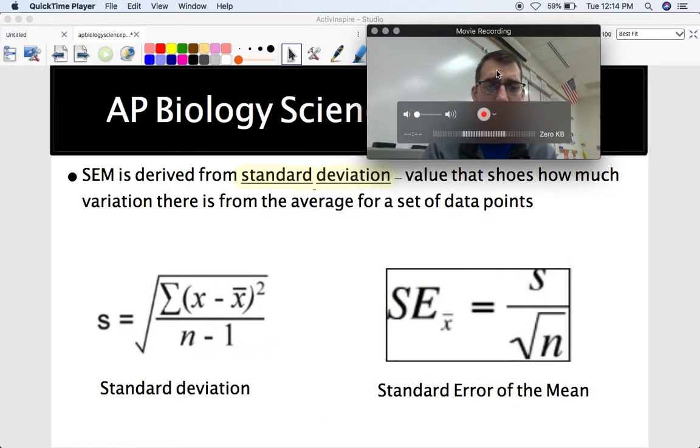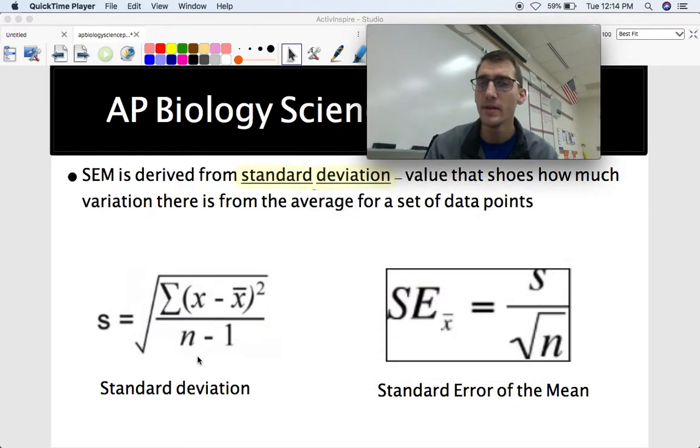So the larger the number, the greater the standard error of the mean and the less confidence we have in the mean actually representing that data point or that group or that sample. So check it out. This plus or minus means here indicates a range. So the number of flies, the average number of flies with the ebony body and long wings is 98, but there's a standard error of the mean about 10 above and below 98.